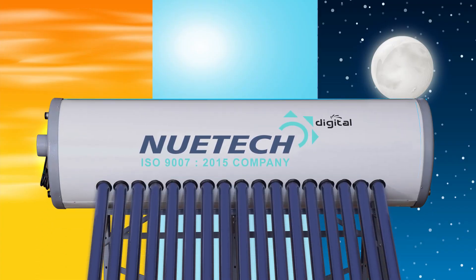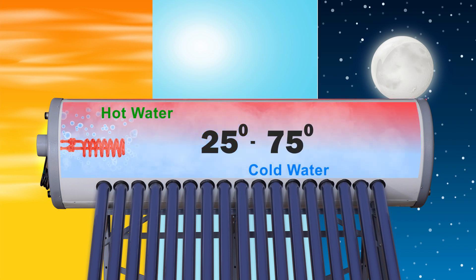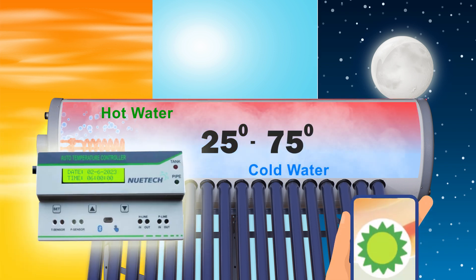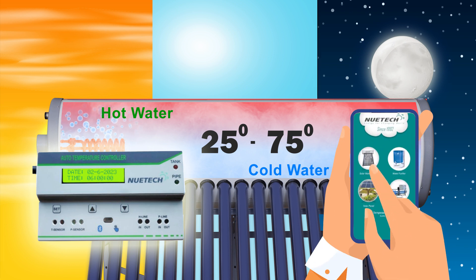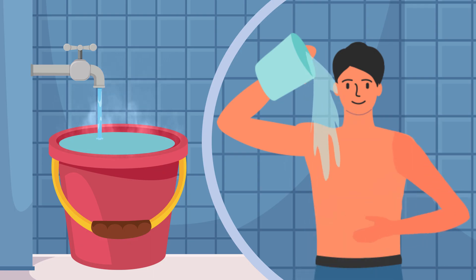In this system, you can set your desired bath time and temperature. For example, if scheduled from 25 degrees to 75 degrees in the morning, afternoon, or evening—24 hours a day, manually or through the Newtech app—hot water will be available according to the right time and temperature with the help of an electrical heater.